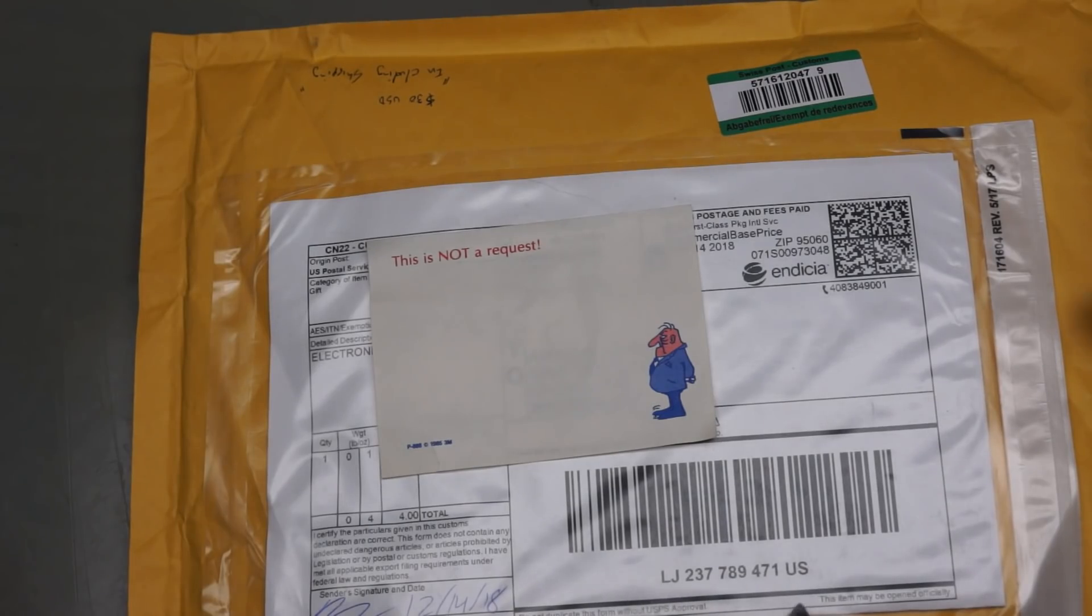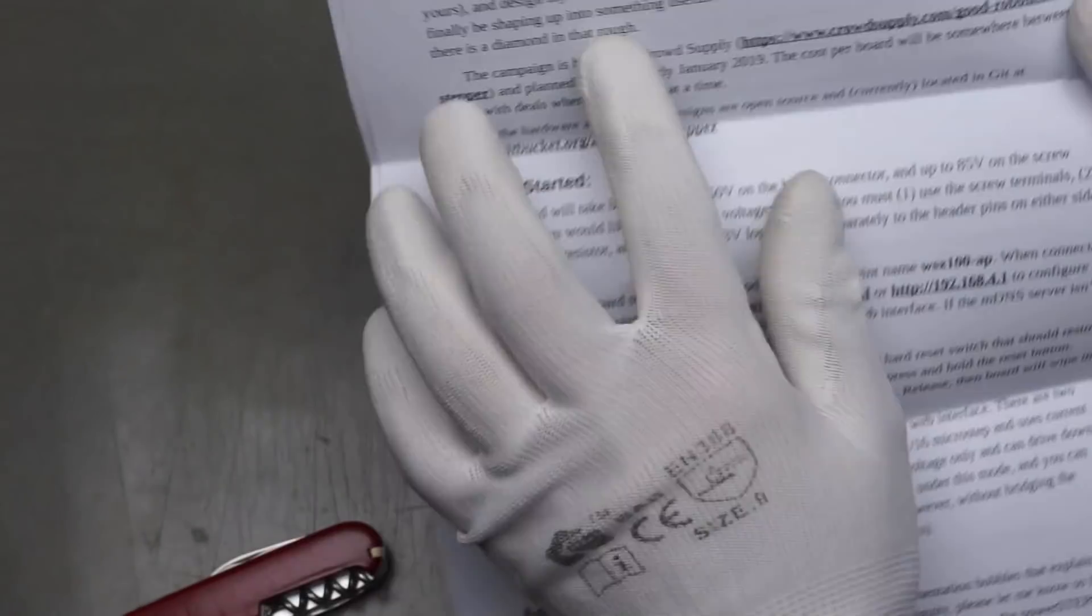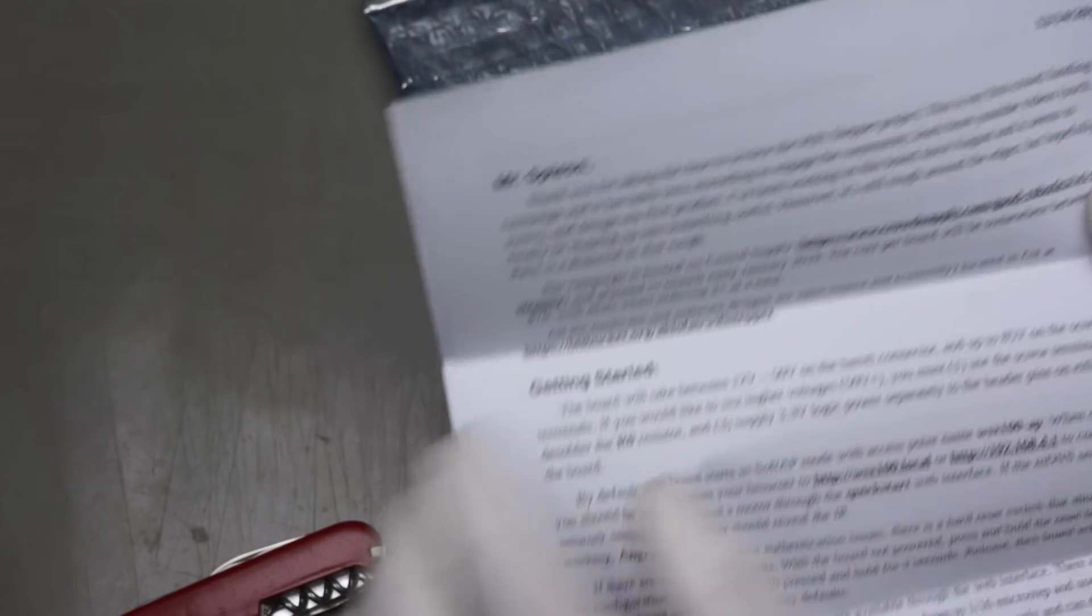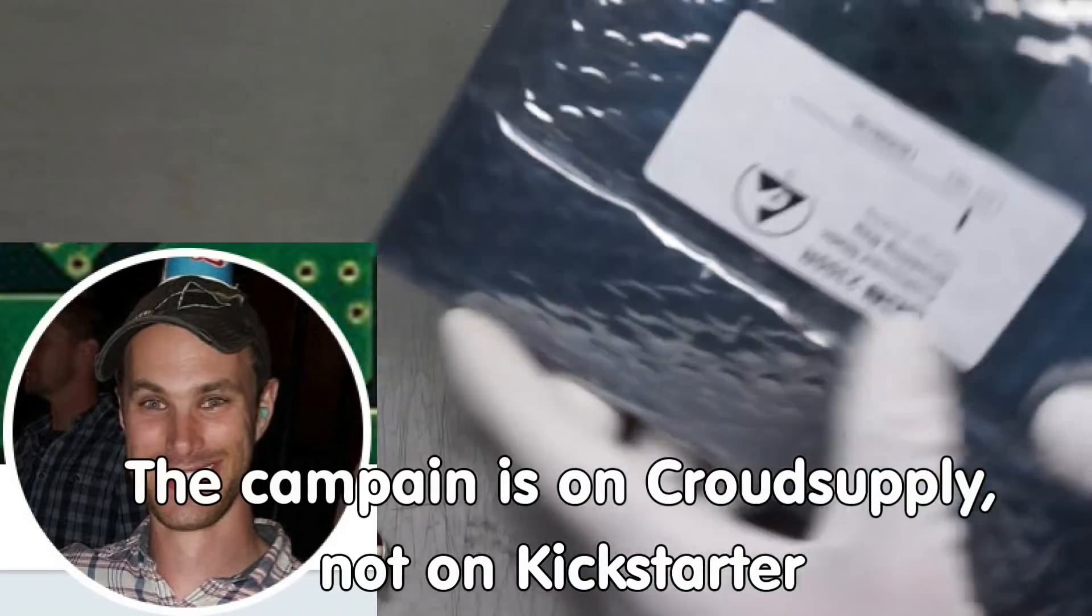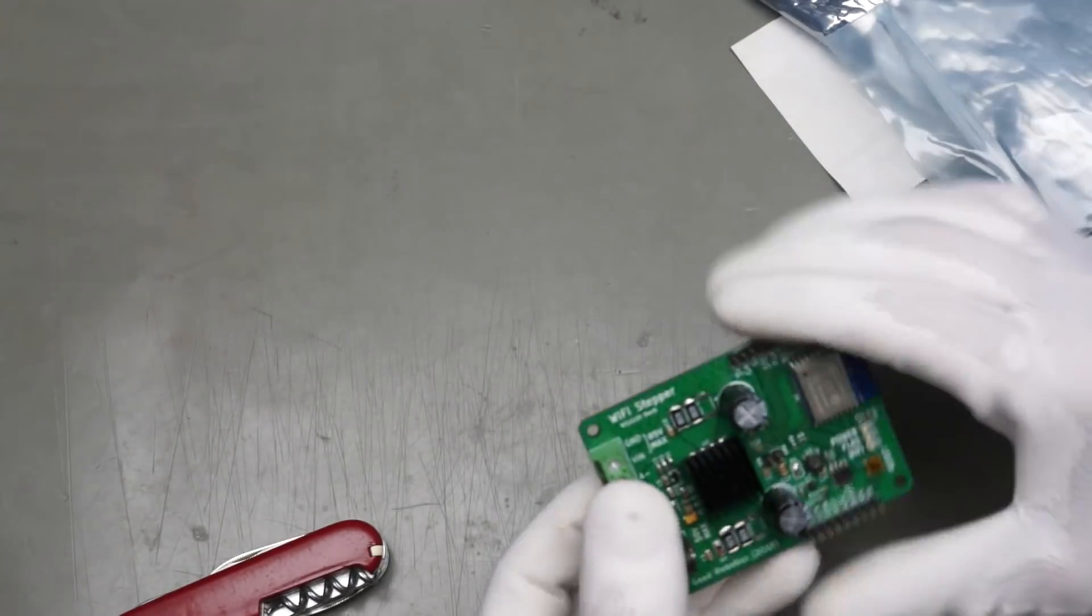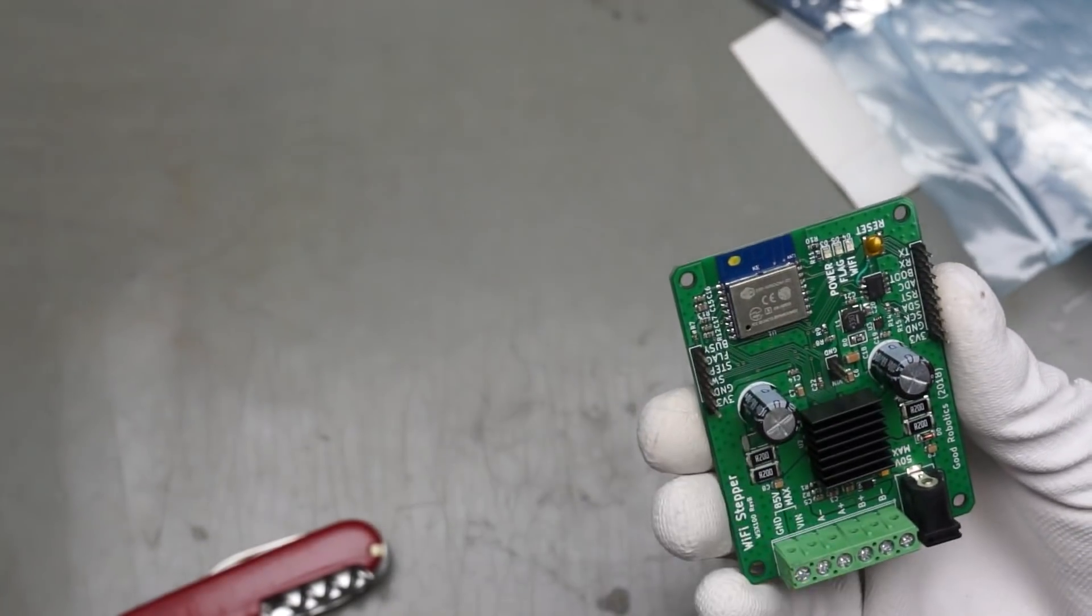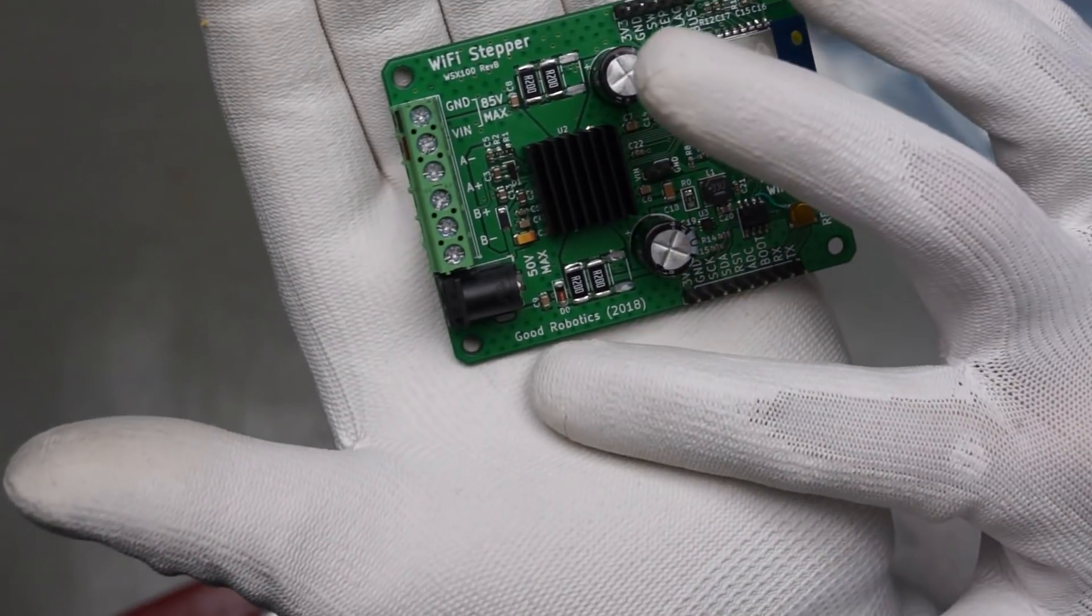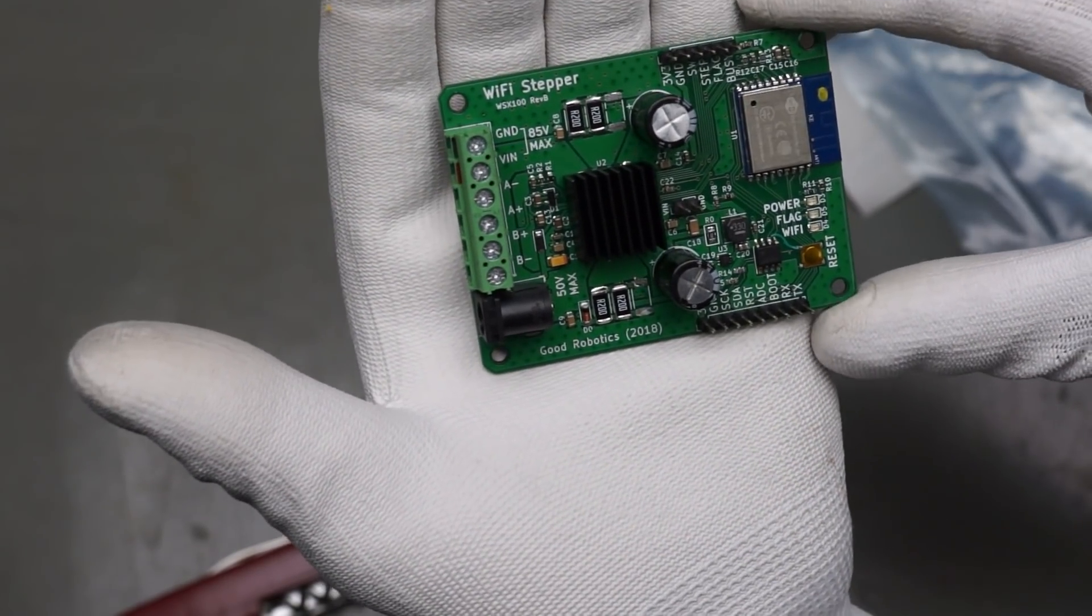This one does not come from China. This one comes from the United States. And it contains a letter. It is from one of my viewers. It is a wi-fi stepper project. And Andrew wrote me that he wants to do a kickstarter and sent me one of those for review. It has an ESP32 on board which is already good for me. And of course we can connect a stepper motor here. And it is made by Good Robotics which is a nice name. Maybe I just hook it up and look what it does.